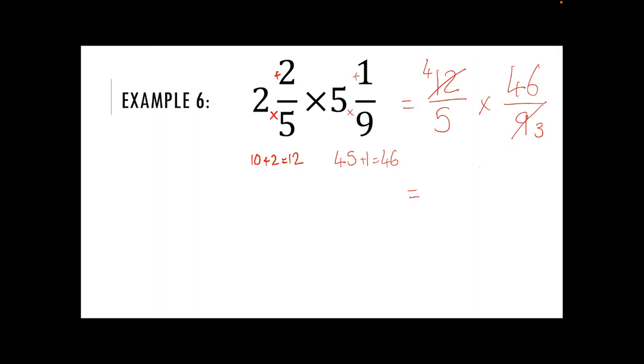Four times by forty-six, well, four sixes are twenty-four. Carry the two. Four fours are sixteen, plus that two gives us eighteen. And then five times by three is fifteen. We cannot simplify any further. So that is our final answer there.